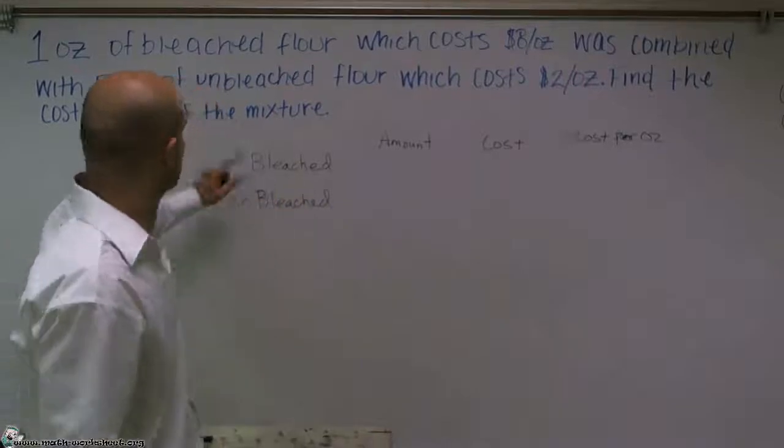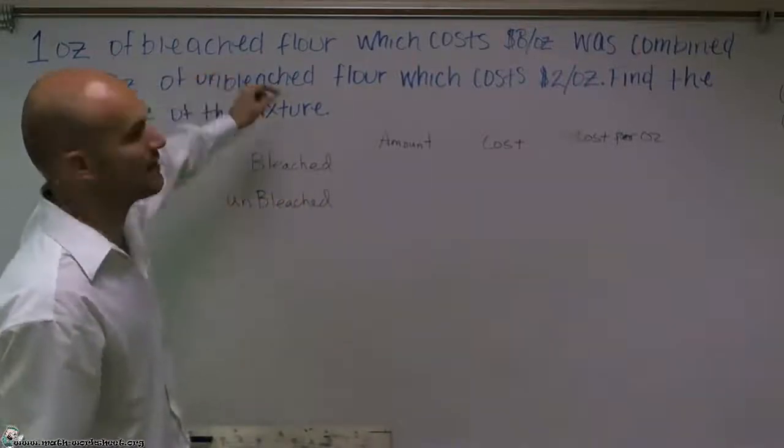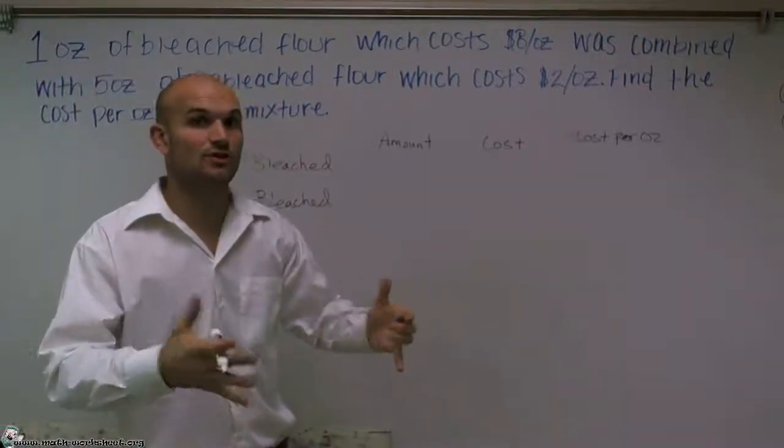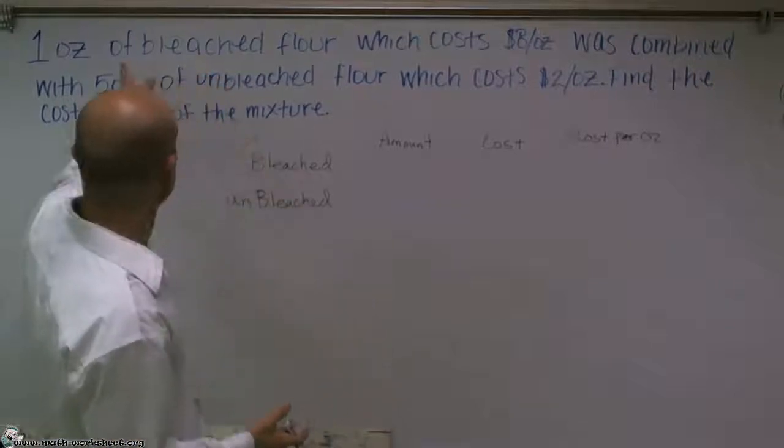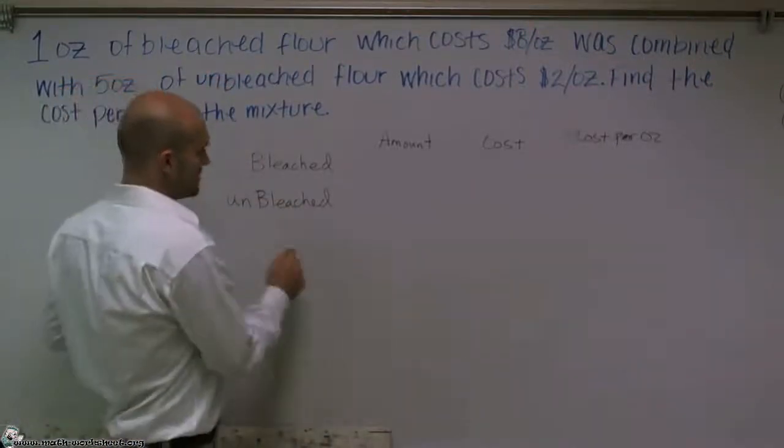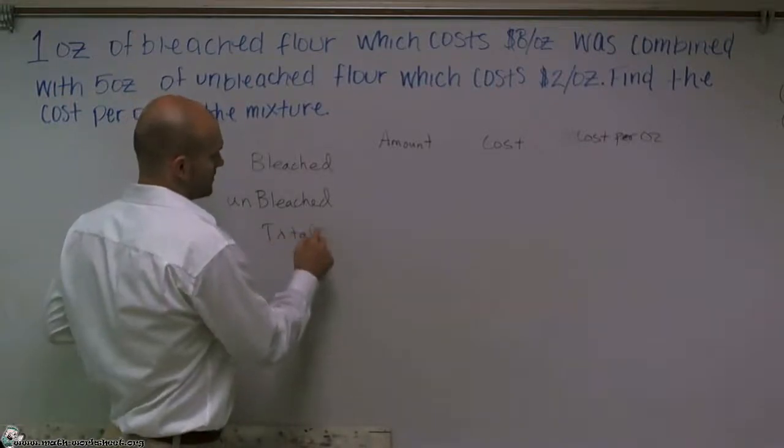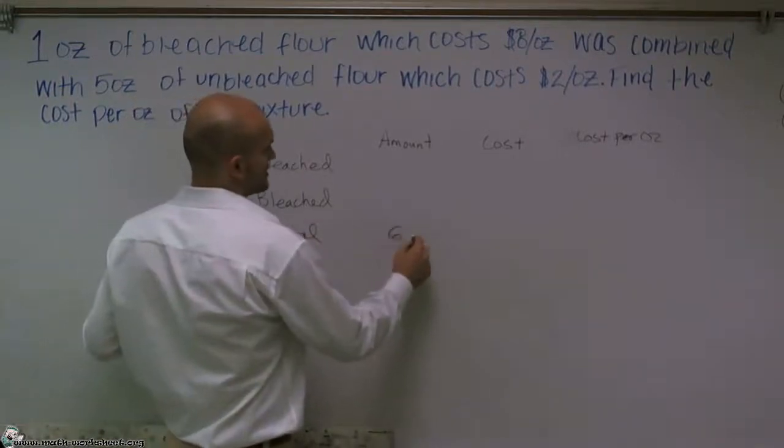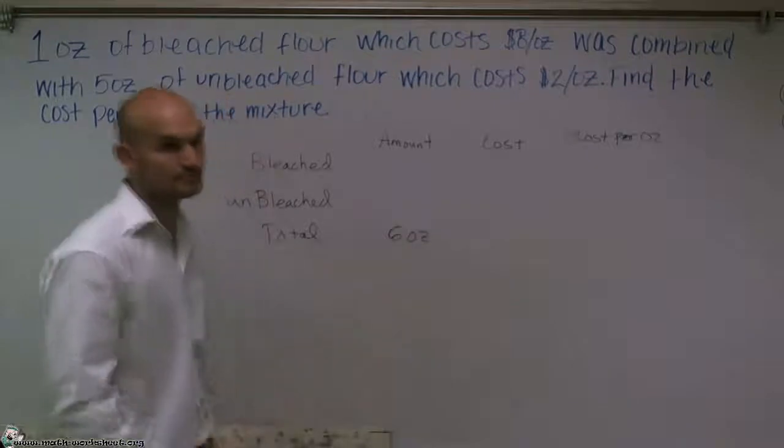So if we're looking at this, they say there is one ounce of bleached flour. Now remember this is a mixture. So the total amount, if there was one ounce of bleached and five ounces of unbleached, that means we have a total of six ounces, right?